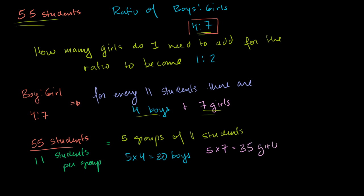And the numbers add up. 20 plus 35 is 55. And 20 to 35 is equal to 4 to 7. So it all works out. So that's what we have right now.